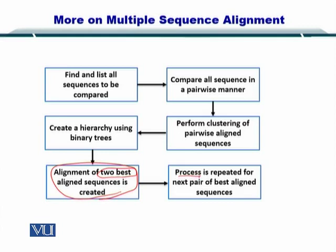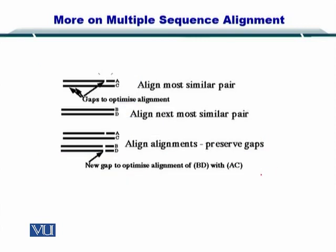Then you repeat the process for the next pair of best aligned sequences. So essentially, if you have two sequences — one and two, given by A and C — and you have aligned both of them, and for the next sequences B and D you have aligned them as well, you then create an alignment between the two pairs by aligning the pairs themselves.